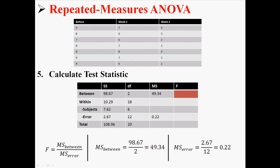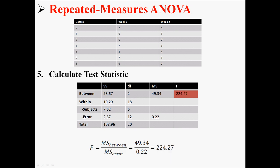So now we have those two things, and we just have to plug them into the f equation like that. So when I divide 49.34 and 0.22, I get an f of 224.27.